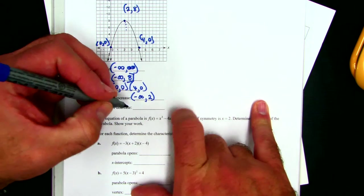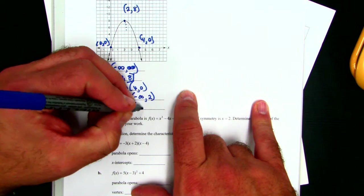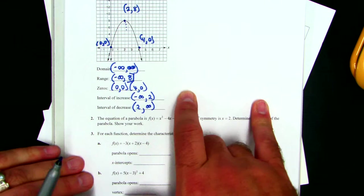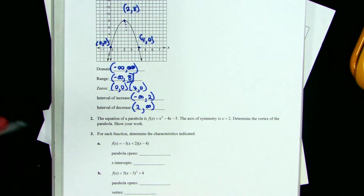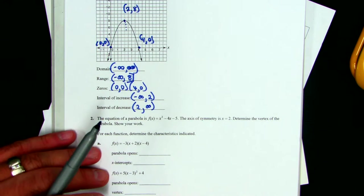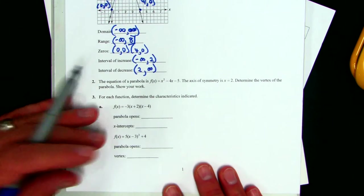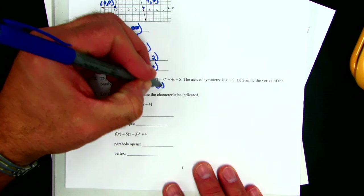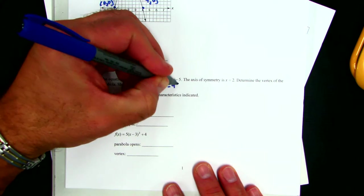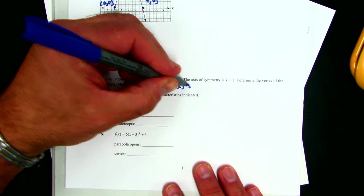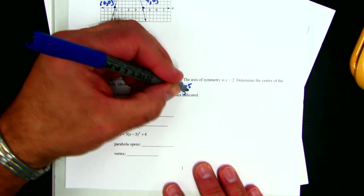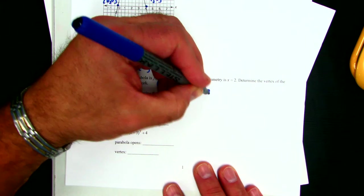And then the interval of decrease starts at 2 and goes to positive infinity. All right, and shouldn't have taken that long. Next one, problem 2, means we're supposed to put a 2 in for this. So that would mean 2 squared minus 4 times 2 minus 5, which is 4 minus 8 minus 5, which is negative 9.